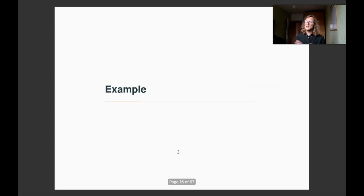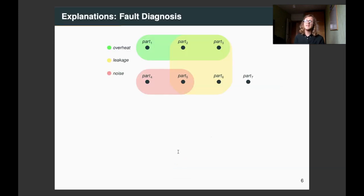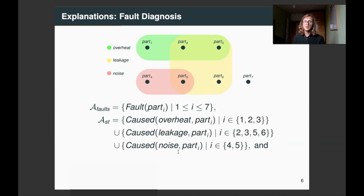So now, let's illustrate this on the example. Suppose we have a fault diagnosis. We have seven parts, and, for example, fault in part one would cause overheat, fault in part five would cause leakage and noise. And we would like to capture this system. So, in particular, we can capture the parts that might fail in the A-box.